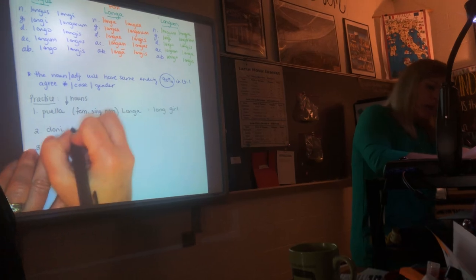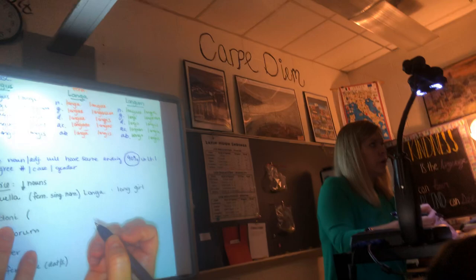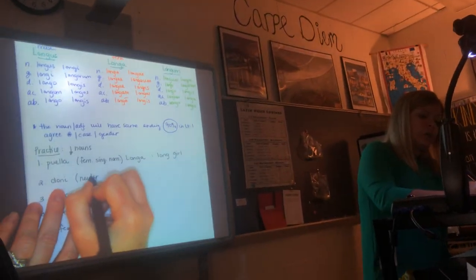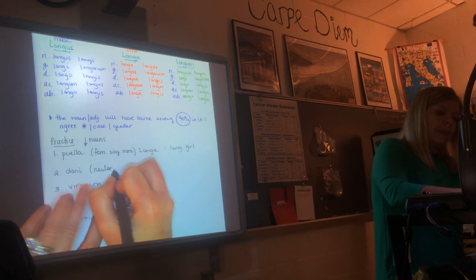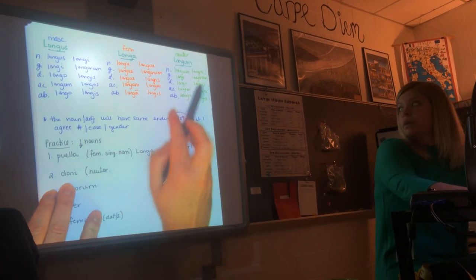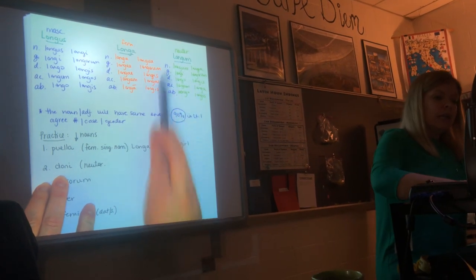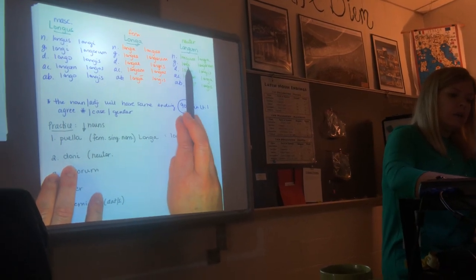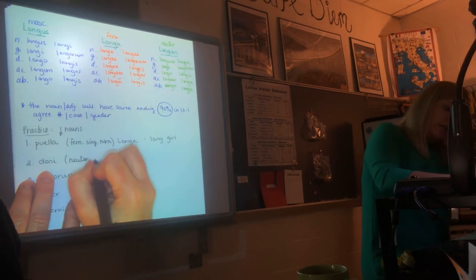Okay. Doni. It comes from the word donum. What's its gender? It's neuter. And if you didn't know, you can look it up in the back of the book. So we're in this neuter box. It ends in an I. Singular. It's on the singular side. There it is. Right there. It's neuter, singular and genitive. Yep.